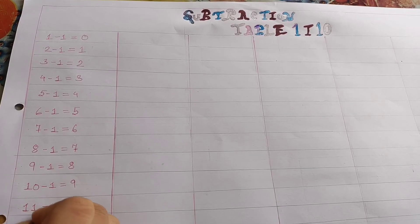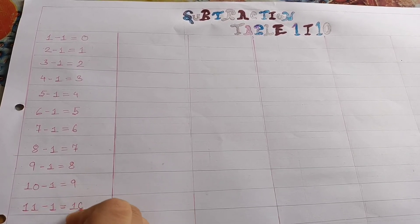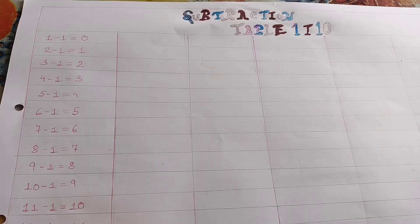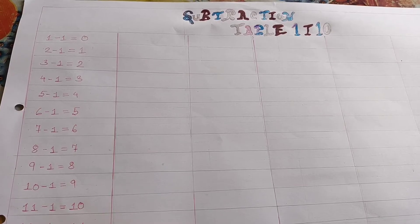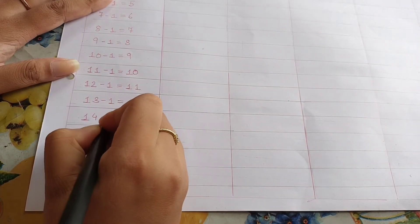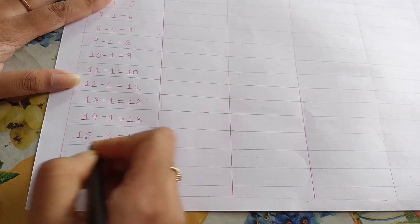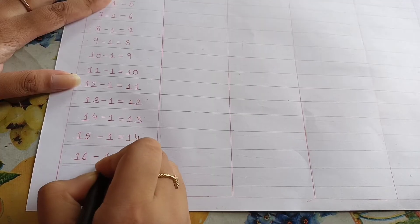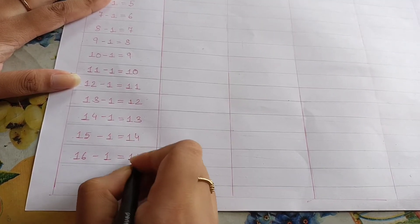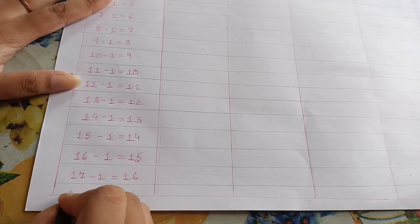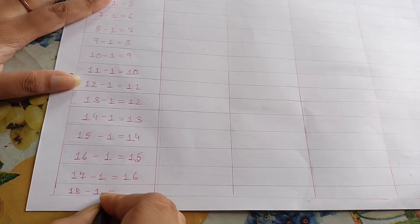Next, 10 minus 1 is equal to 9. Next, 11 minus 1 is equal to 10. Next, 12 minus 1 is equal to 11. Next, 13 minus 1 is equal to 12. Next, 14 minus 1 is equal to 13. Next, 15 minus 1 is equal to 14. Next, 16 minus 1 is equal to 15. Next, 17 minus 1 is 16. Next, 18 minus 1 is equal to 17.